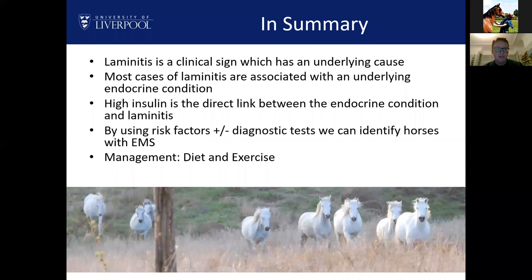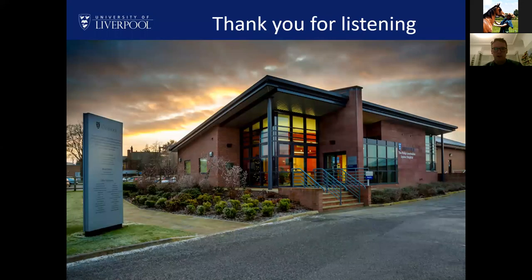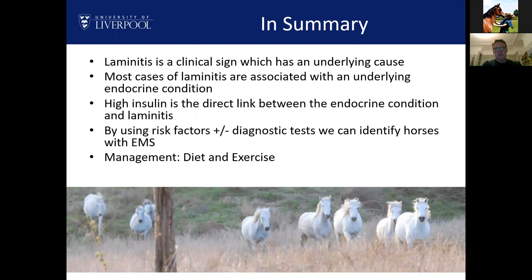Laminitis is not a disease on its own — it's a clinical sign of an underlying disease. This has massively changed in the last 10–20 years. Most cases of laminitis are associated with an underlying endocrine condition, predominantly in the UK and worldwide. Insulin is the direct link between endocrine conditions — both PPID and EMS — and laminitis. For EMS, we can use risk factors with or without extra diagnostic tests to identify horses and hopefully prevent laminitis. Management boils down mostly to diet and exercise, but can be assisted with nutraceuticals or medication.